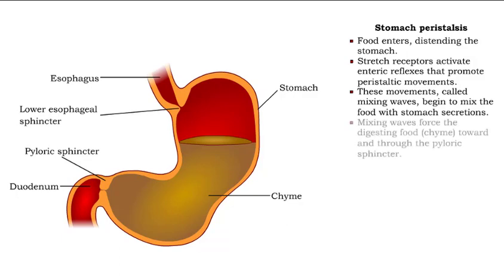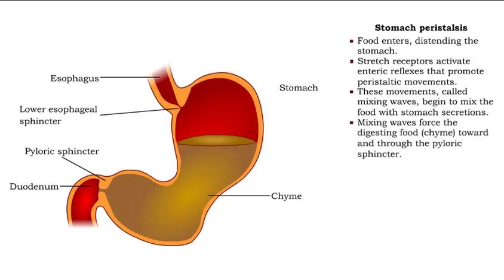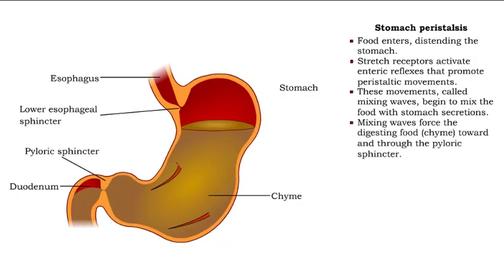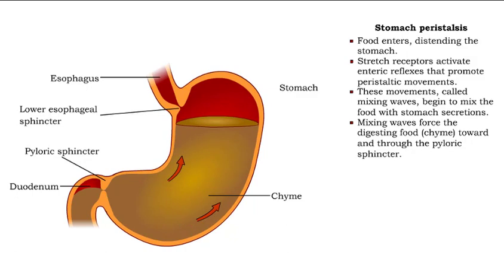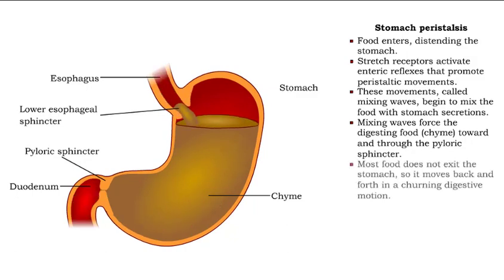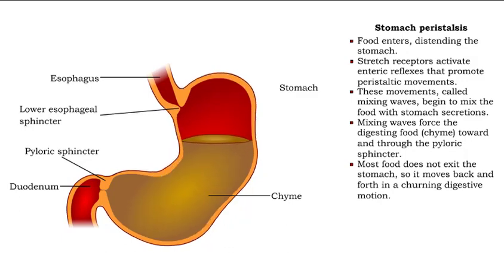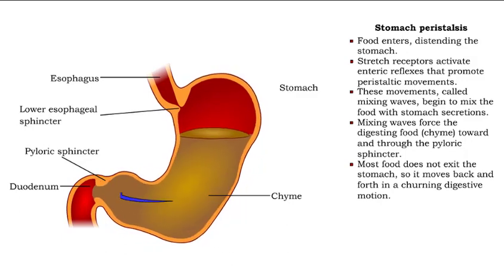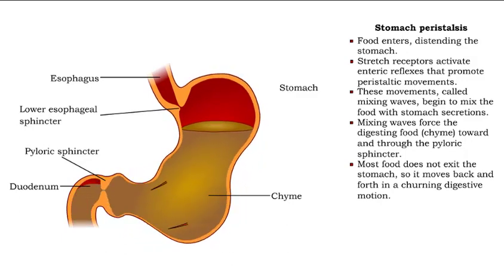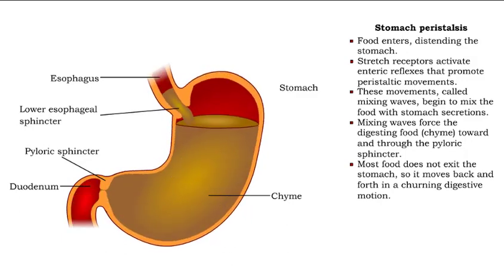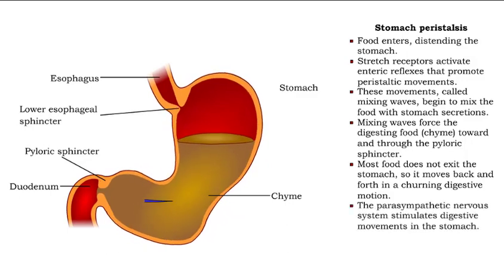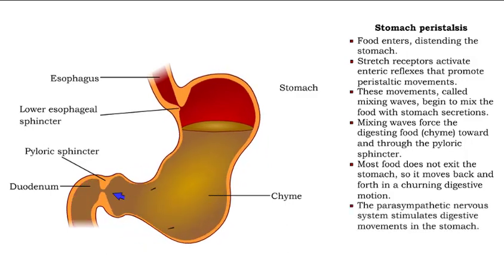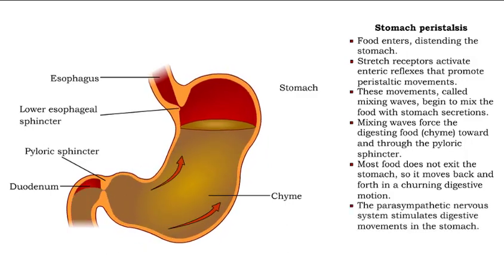The mixing waves force the digesting food, called chyme, toward and through the pyloric sphincter. Most of the food remains in the stomach, so it moves back and forth in a churning digestive motion. Digestive movements in the stomach are stimulated by the parasympathetic nervous system.